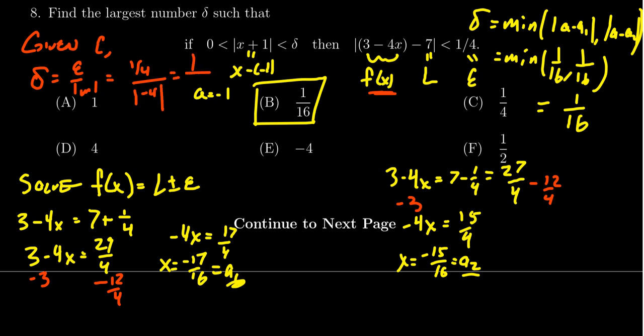This is characteristic of lines: to find the delta for a line, you just take epsilon and divide it by the slope, taking absolute values. That only works for linear functions like y = 3 - 4x, but that's something we could have applied in this one to dramatically simplify the process.